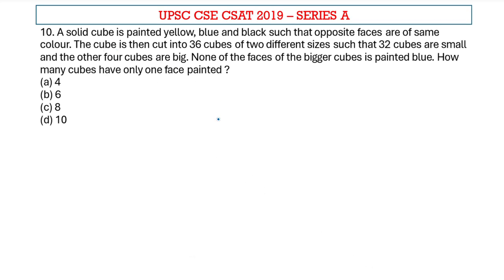A solid cube is painted yellow, black, and blue such that opposite faces are of the same color. The cube is then cut into 36 cubes of two different sizes, such that 32 are small and the other four cubes are big.